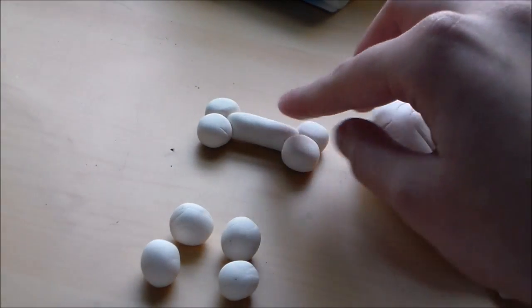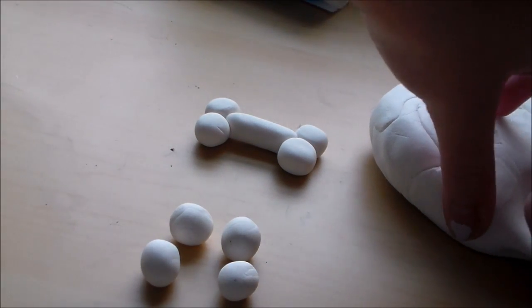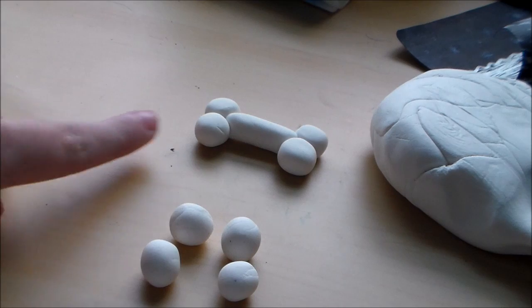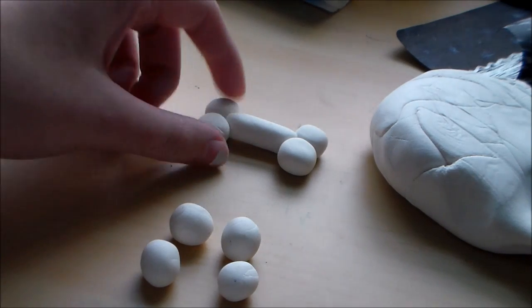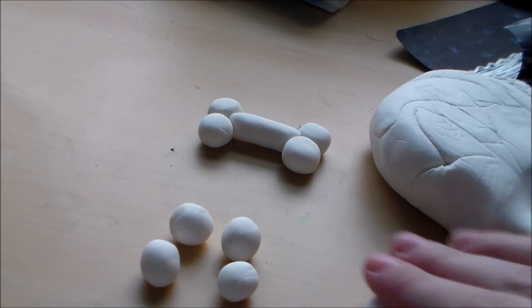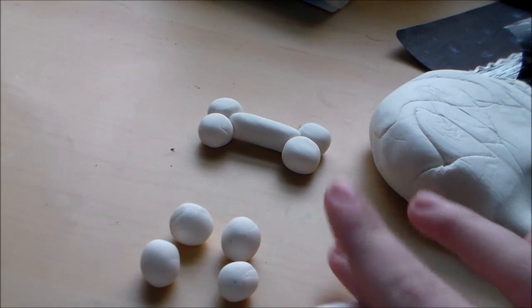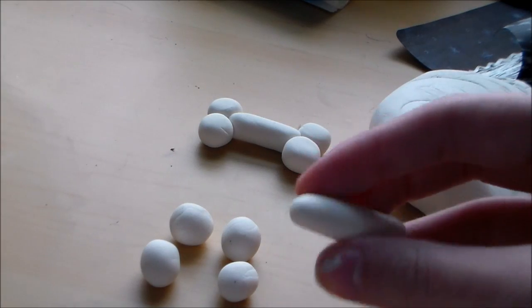Once you have all four, then you're going to make this little piece here that's going to connect it all. I would use about double what you used for one ball, so two balls worth combined. Now what you're gonna do is instead of making it circular, you're gonna roll it out like this to become a more cylindrical shape.